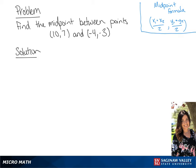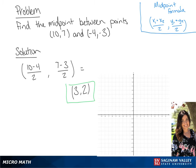We're going to find the midpoint between points (10, 7) and (-4, -3). We're going to use the formula in the top right-hand corner to plug the points in. So we have 10 plus negative 4 over 2, and 7 plus negative 3 over 2. If we solve each one of these, we get our midpoint of 3 and 2.